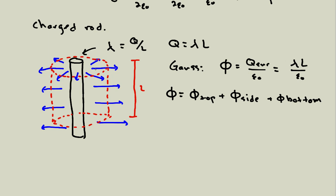At the top, the electric field points radially outward from the rod, but the area vector points up — there's a 90-degree angle between them, so the flux through the top is zero. The same is true at the bottom: the area vector is perpendicular to the electric field, so that's also zero. All that's left is the flux through the side, where the area vector points radially outward and the electric field also points radially outward — so the flux through the side equals the electric field times the area of the side.